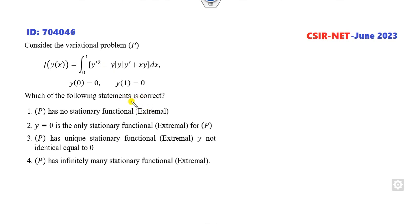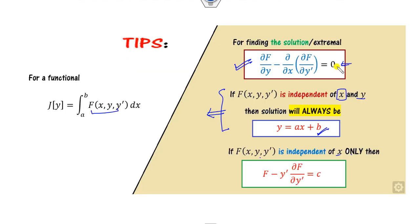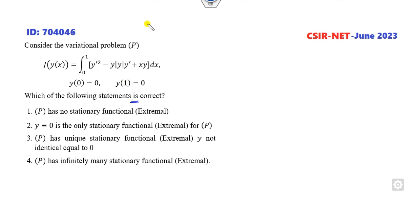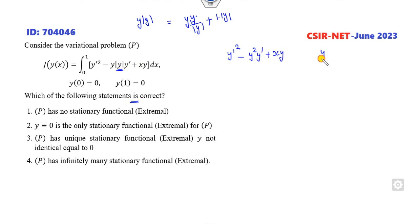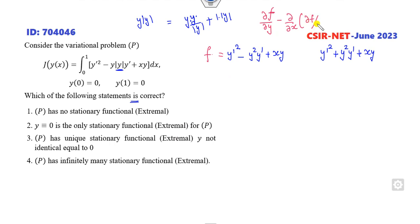The first question asks which of the following statements is correct — this is Part B with only one correct option. To solve this, we find the partial derivative with respect to Y. Applying the product rule gives Y over |Y| plus 1 times |Y|. Alternatively, you can express the function by considering that |Y| can be positive or negative, giving two separate expressions accordingly.